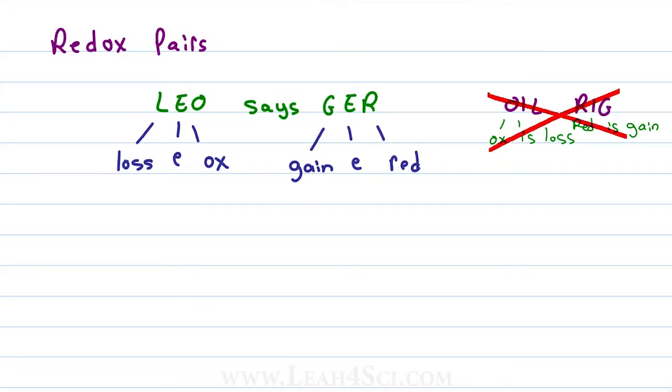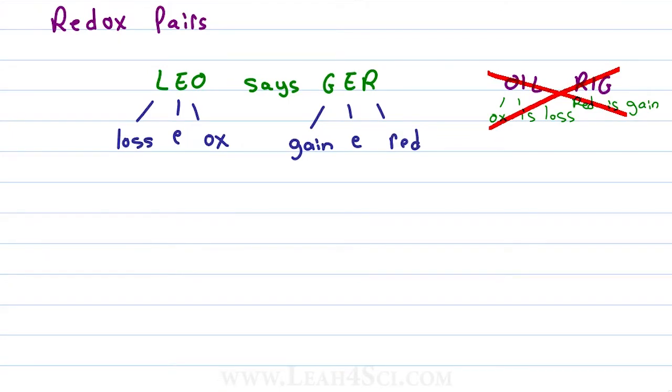Leo the lion says grr clearly tells us loss of electrons is oxidation, gain of electrons is reduction, but we have to remember that they are connected to each other.